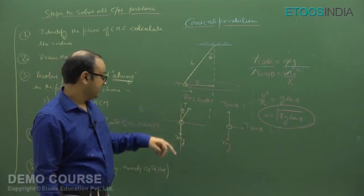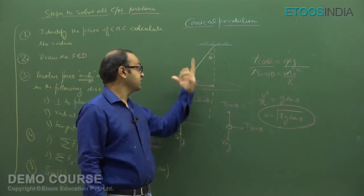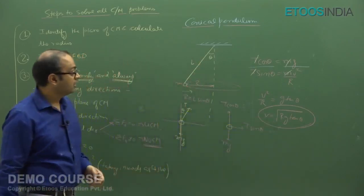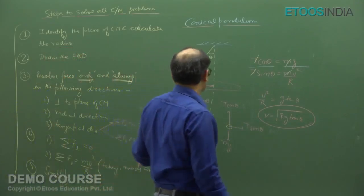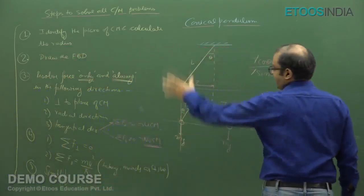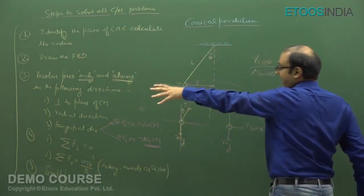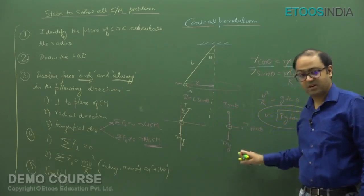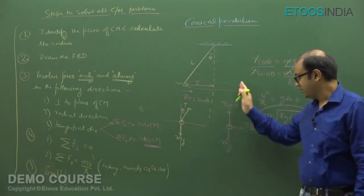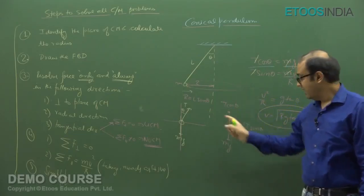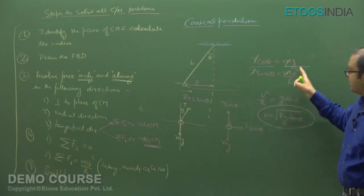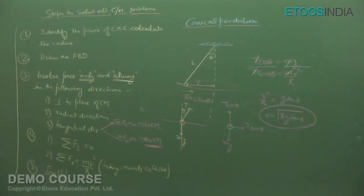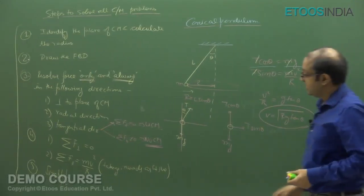The value of r is L sin theta, so you can substitute that if needed. Practice this yourself: draw the FBD, draw the components, set net perpendicular force to zero, set net radially inward force equal to Mv²/r, and solve those two equations.